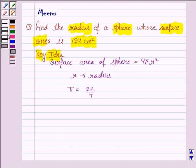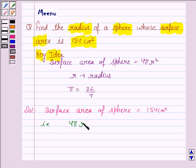Let us now move on to the solution. We are given that the surface area of sphere is equal to 154 cm². That is, 4πr² is equal to 154 cm².